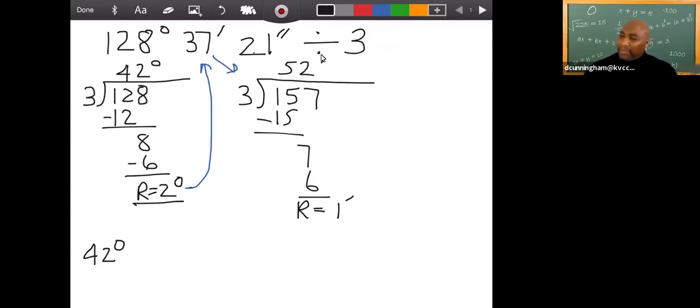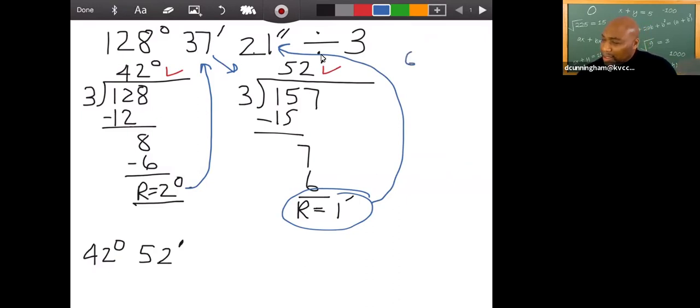Now I'm not done because I got to work with the seconds. I got to divide that by three, but before I divide by three I got to look at my remainder. I got one minute. So we know that 60 seconds equals one minute, and so I'm going to add 60 to that 21. So it's basically saying 60 plus 21, which gives me 81.